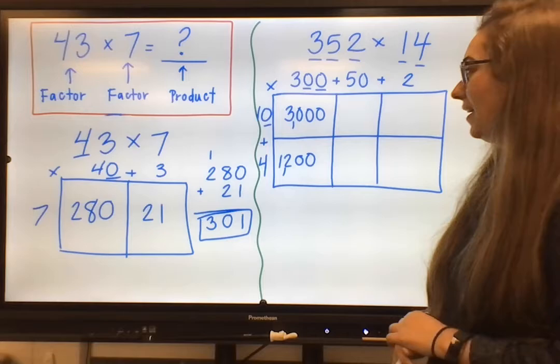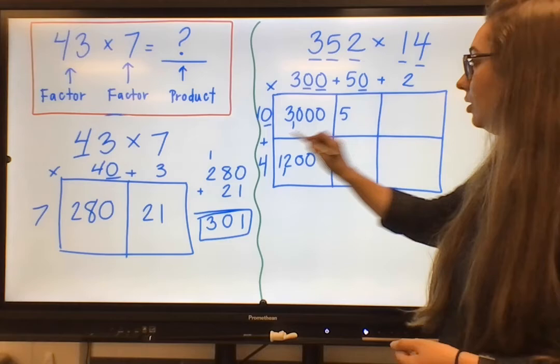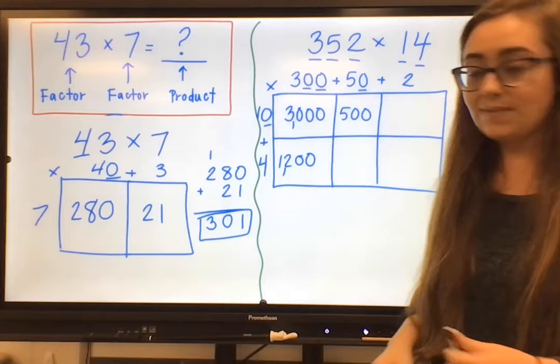Now I see that I'm multiplying 10 by 50, but my base equation is just 1 times 5. I know that to be 5. And I have 1, 2 zeros, 1, 2. So that tells me that 10 times 50 is 500.